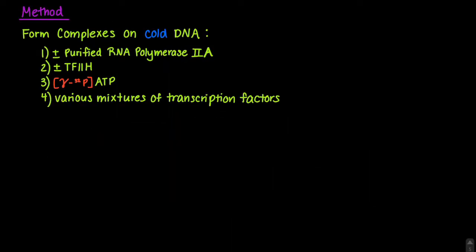The method for the assay is as follows. Complexes were formed on cold promoter DNA. Each reaction contained plus or minus RNA polymerase 2A, which contains the unphosphorylated form of RPB1. These reactions also contained plus or minus TF2H, and gamma labeled 32P ATP.